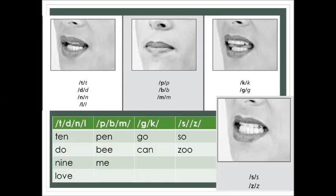Now I'm going to record a video to show you how to pronounce the letters isolated and then in a word. T for ten, D for do, N for nine, L for love, P for pen, B for be, M for me, G for go, K for can, S for sew, T for you, Z for zoo.